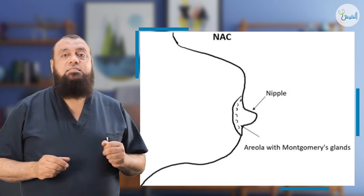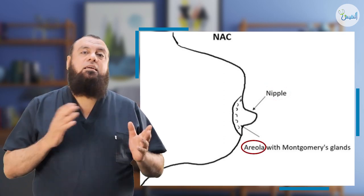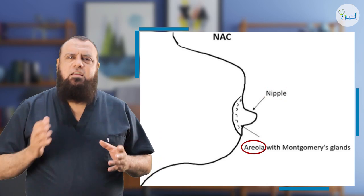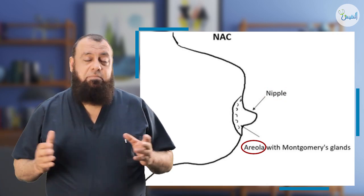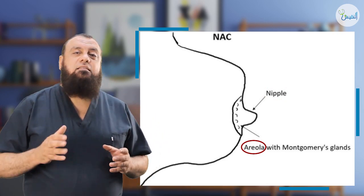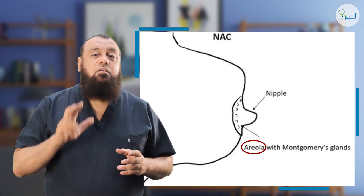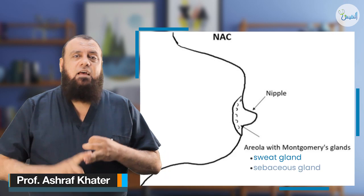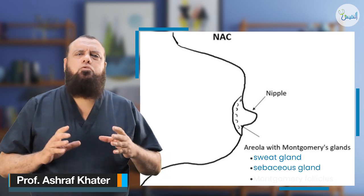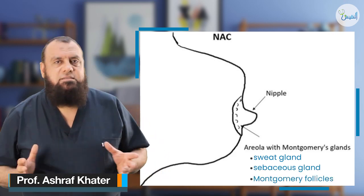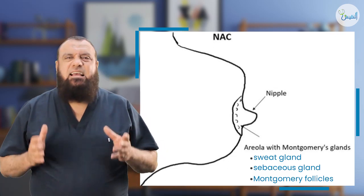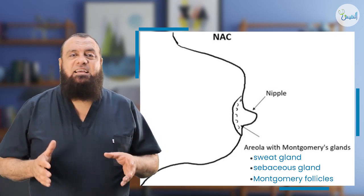The second is the areola, which is a dark area around the nipple. The areola's circumference is about 4 centimeters. The areola contains three types of glands: sweat glands, sebaceous glands, and what we call Montgomery follicles. Montgomery follicles are an accessory mammary gland.